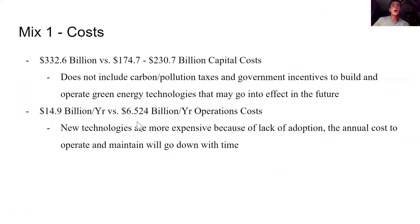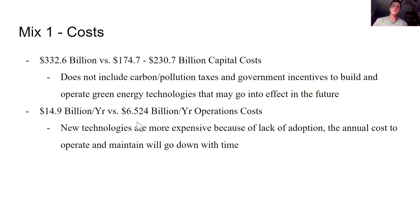For the overall costs of Mix 1, we created a reference called the status quo, where current mix generation capacities were expanded proportionally. With current cost projections, Mix 1 is about 1.5 to 1.9 times more expensive to install and about 2.3 times more expensive to operate and maintain than the status quo mix. However, the downward cost trend for renewables will continue, and carbon taxes, pollution taxes, government incentives, and overall adoption will increase fossil fuel costs and decrease renewable costs, making this mix much more economically feasible in the future.